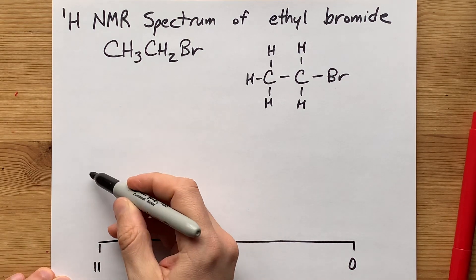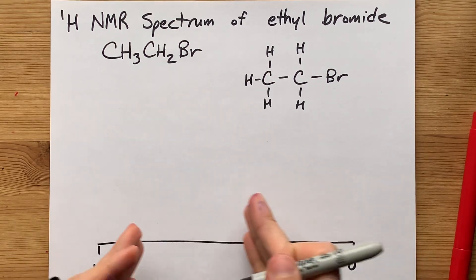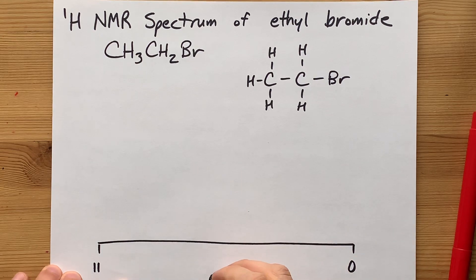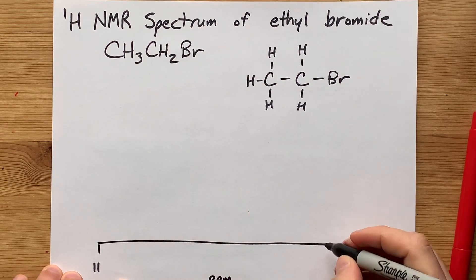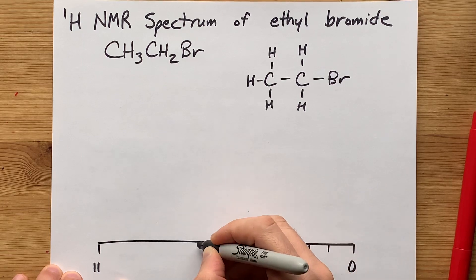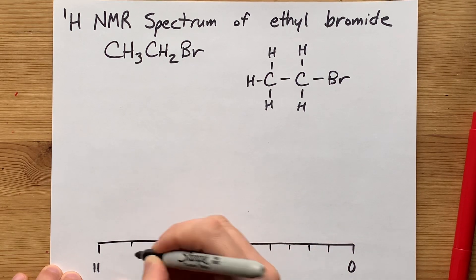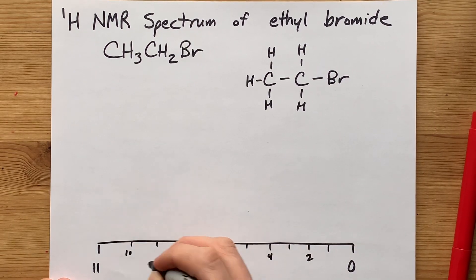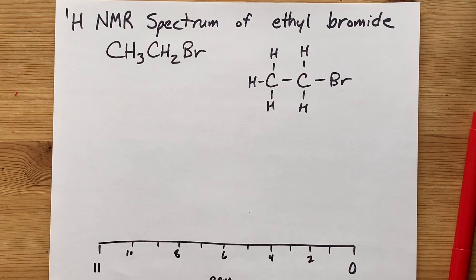This area is called deshielded or downfield, and this is called shielded or upfield. This is measured in ppm, and you'll need numbers from 1 through 11. Just give yourself some numbers. You're always supposed to label your grids in math anyways.